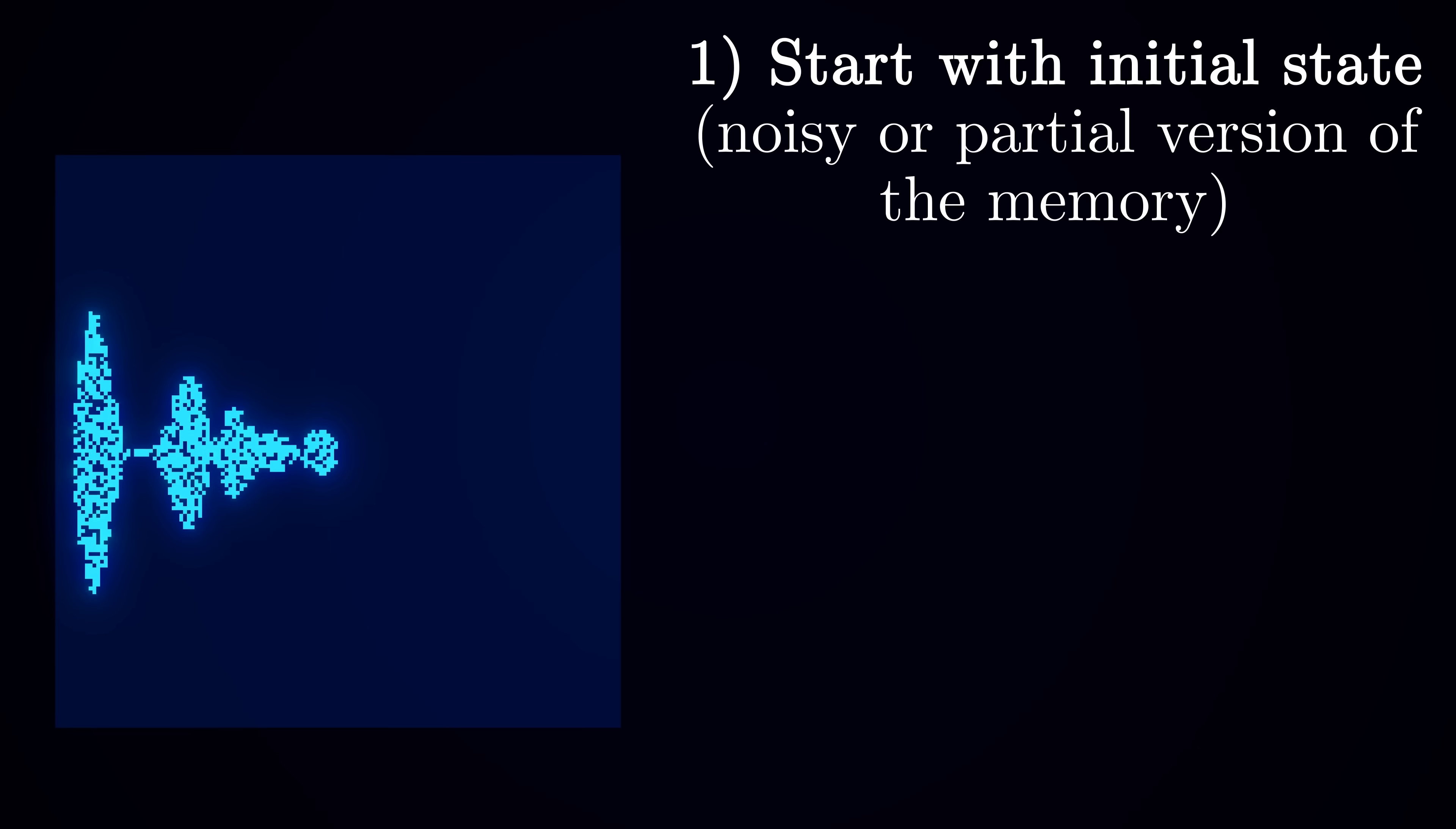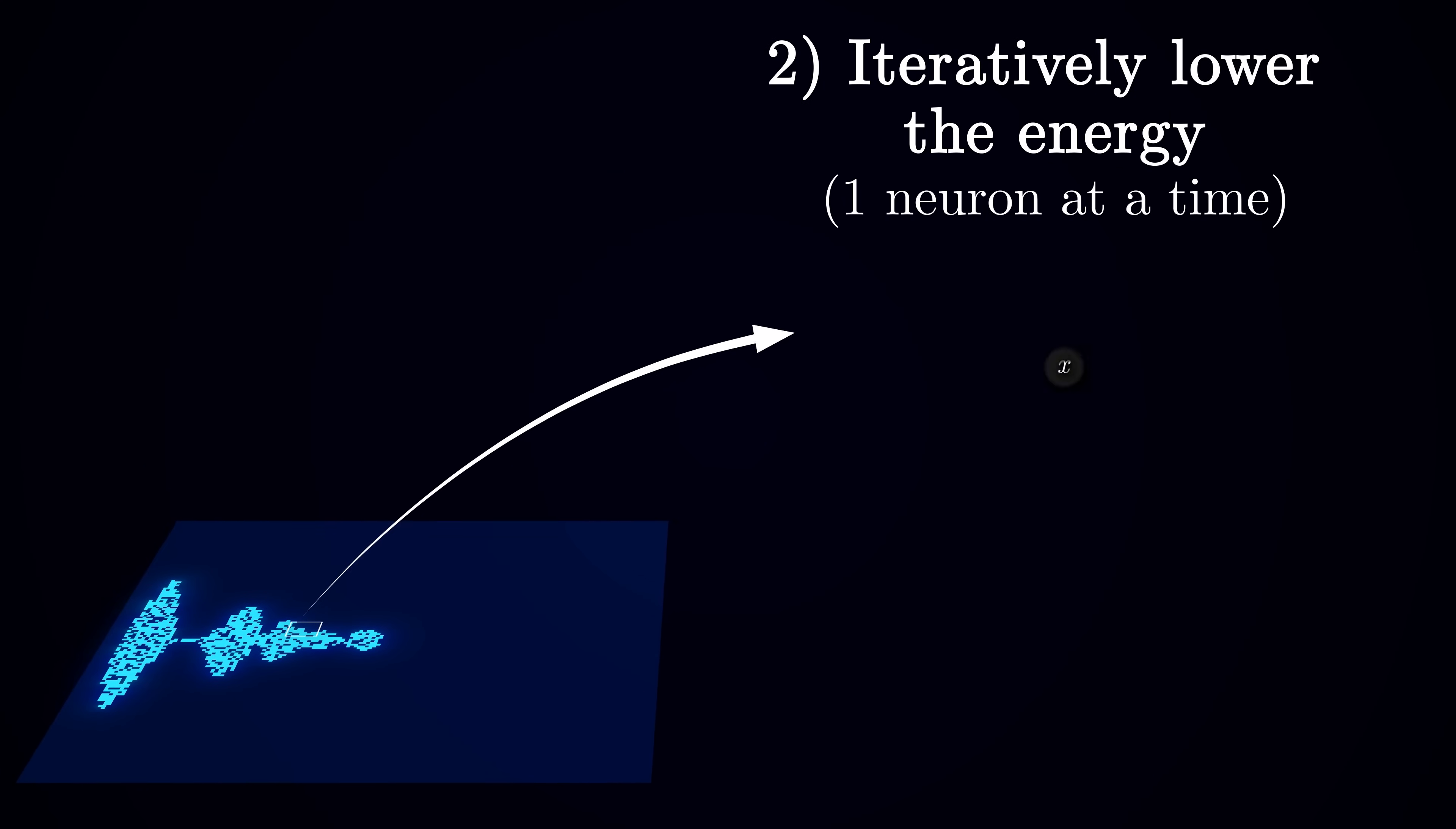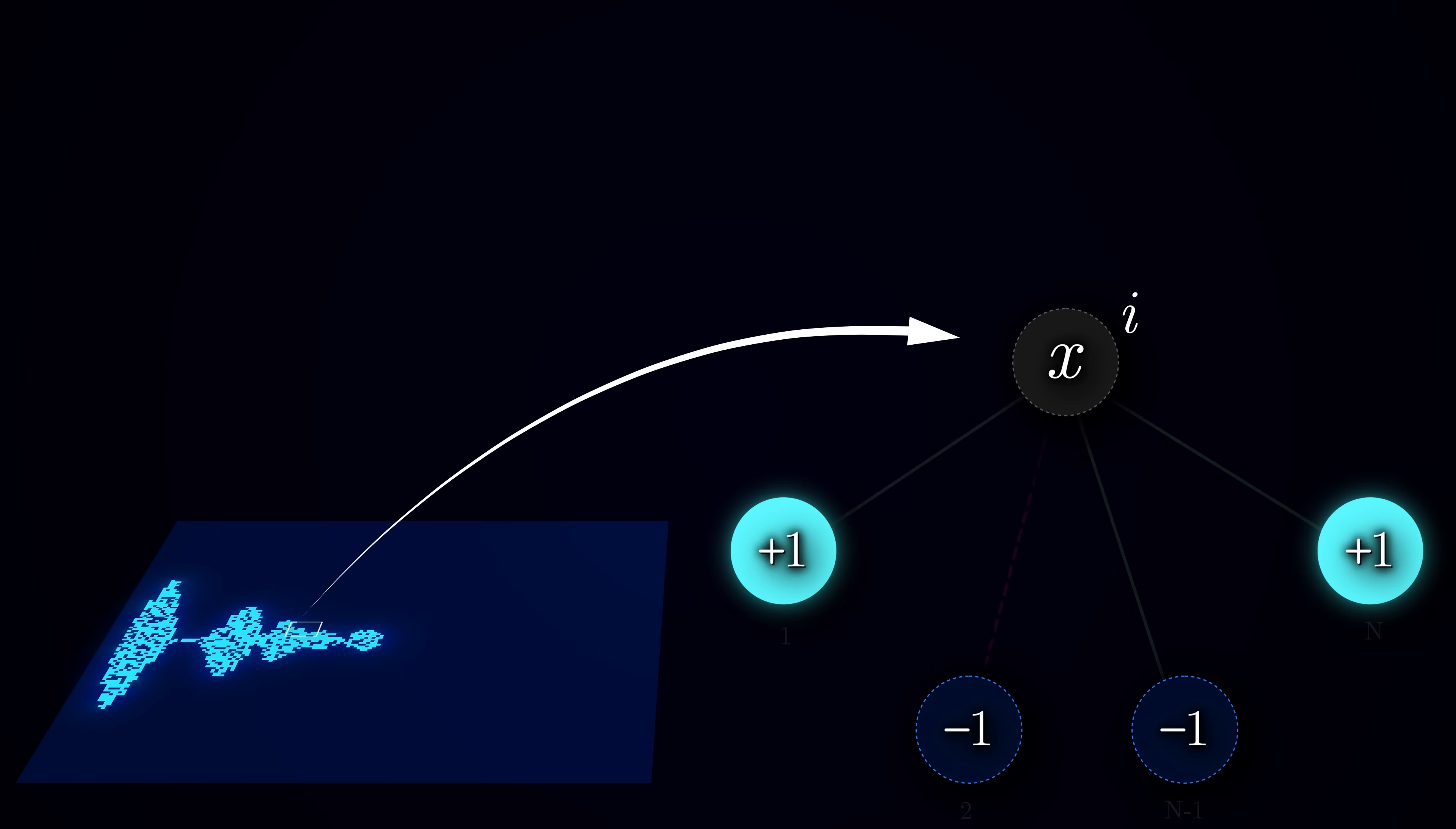Once the initial condition is set, we will iteratively try to lower the energy value by focusing on updating one neuron at a time. Let's denote the neuron we are currently considering as neuron i. We will calculate the total weighted input to it from all other neurons in the network. This input, which we'll denote as hi, is the sum of the states of all other neurons multiplied by their respective connection weights.